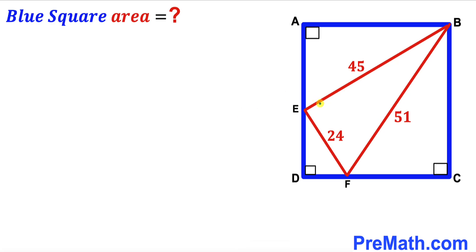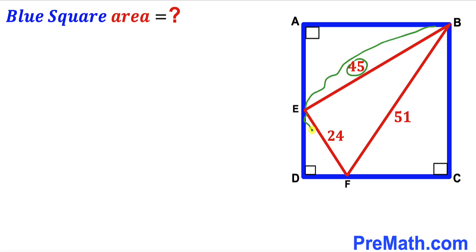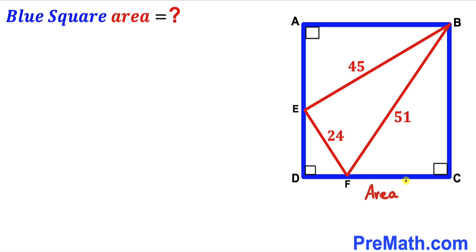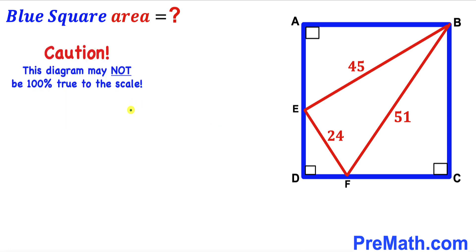Welcome to pre-math. In this video we have got triangle B, E, F fully confined in a blue square A, B, C, D as you can see in this given diagram, such that the side lengths of this red triangle are 45, 24, and 51 respectively. Our task is to calculate the area of this blue square A, B, C, D. Please don't forget to give a thumbs up and subscribe, and please keep in mind that this figure may not be 100% true to the scale.